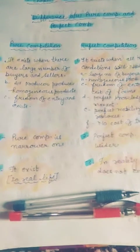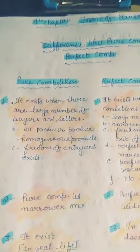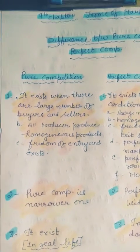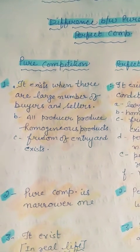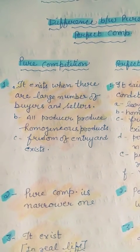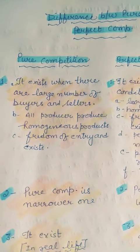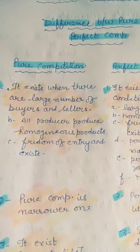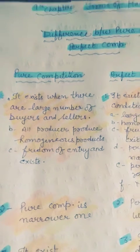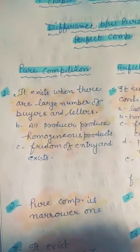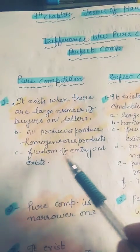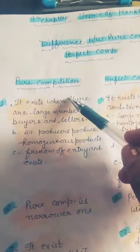Now children, first of all we are talking about pure competition. Pure competition exists when there are a large number of buyers and sellers. B point: all producers produce homogeneous products. And C point: there is freedom of entry and exit. These three conditions together define pure competition.